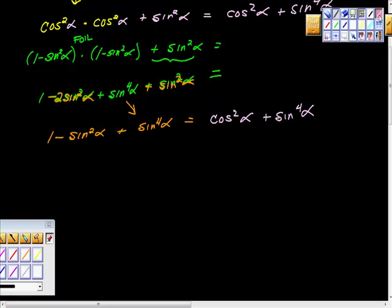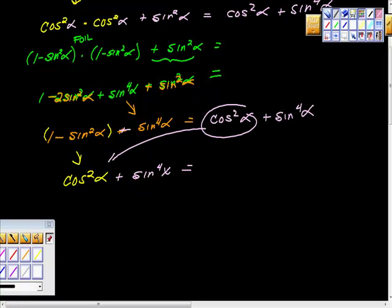Look at this for a second and see if we haven't accomplished this. I have 1 minus sine squared alpha, and 1 minus sine squared alpha, if we use our Pythagorean identities, is cosine squared alpha plus sine to the fourth alpha.